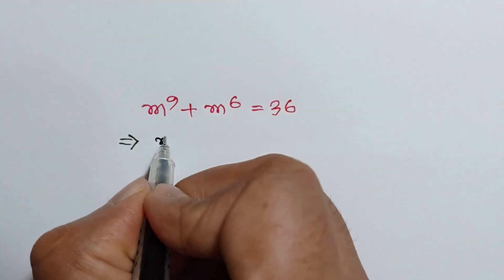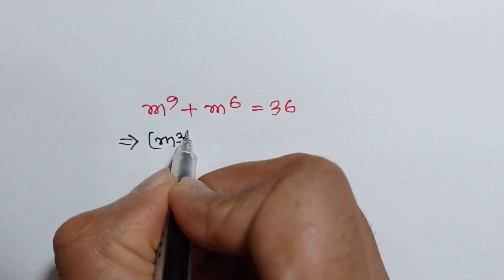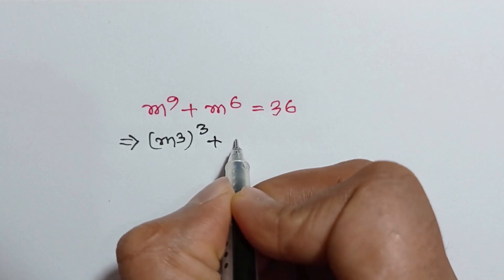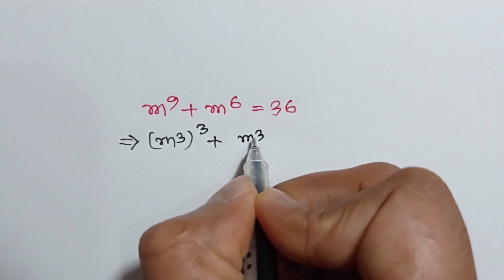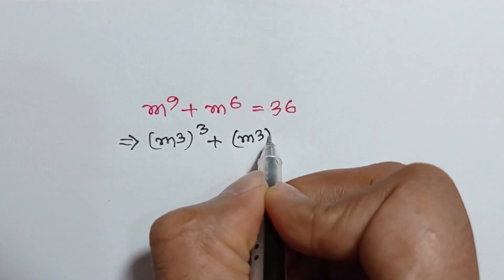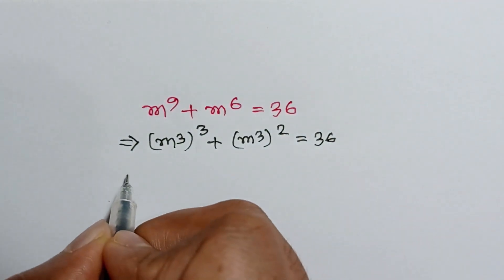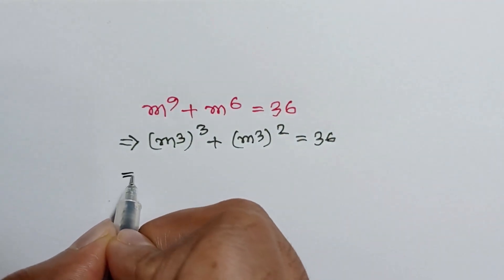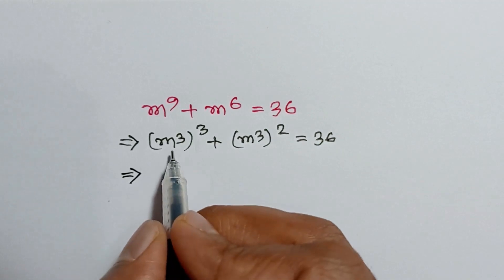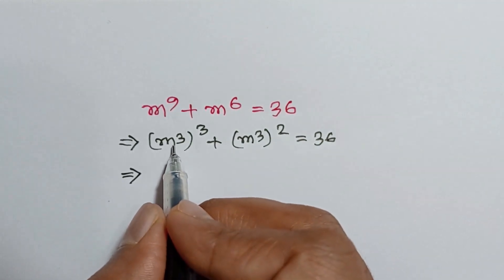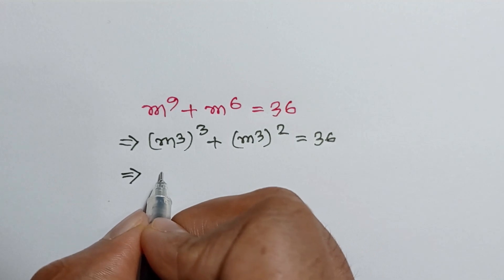So we can write (m cubed) whole cubed plus (m cubed) whole squared is equal to 36. Here m cubed is common, so let m cubed be equal to x.